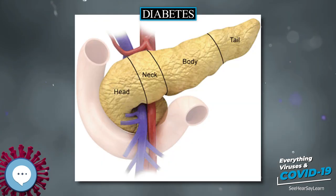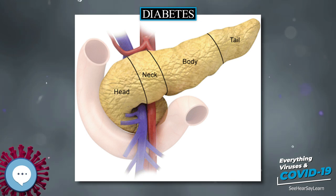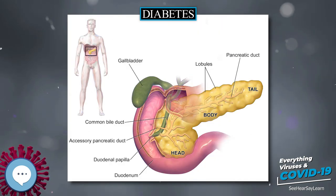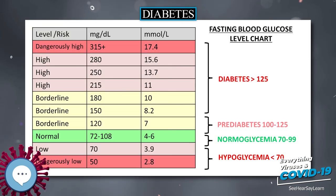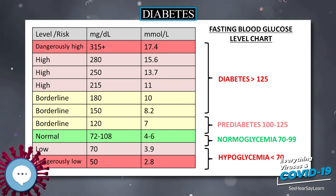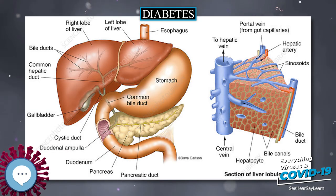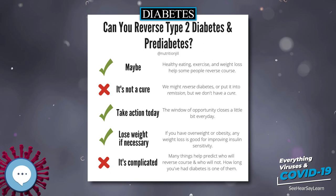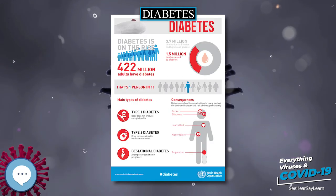The word mellitus comes from the classical Latin word mellitus, meaning sweetened with honey. The Latin word comes from mel meaning honey, sweetness, pleasant thing. It was Thomas Willis who in 1675 added mellitus to the word diabetes as a designation for the disease, when he noticed the urine of a person with diabetes had a sweet taste (glycosuria). This sweet taste had been noticed in urine by the ancient Greeks, Chinese, Egyptians, Indians, and Persians.